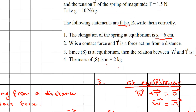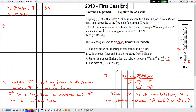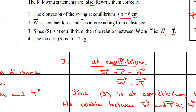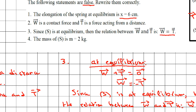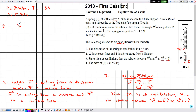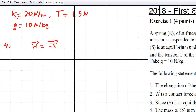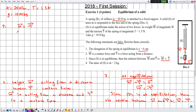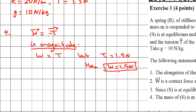Statement four says the mass of S is m equal to 2 kilograms — the mass value is wrong. To find the correct mass, we use the equilibrium condition W⃗ equals minus T⃗. In magnitude, the weight W equals the tension T equals 1.5 newtons. With g equal to 10 newtons per kilogram and the relation W equals m times g, we solve for m.